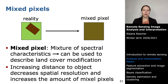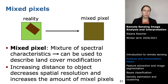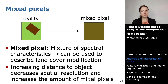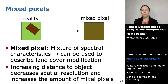We are not only talking about colors and RGB but about spectral characteristics. A mixed pixel is a mixture of all spectral characteristics — for example, mixed hyperspectral signatures. This can be used to describe land cover modification: when the spectral characteristic of a specific pixel changes, you can relate this to land cover modification, since modification is defined as the gradual change of the characteristics of a land cover class.